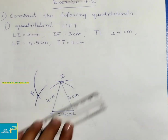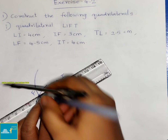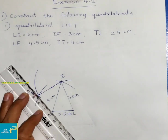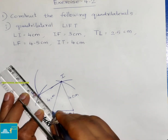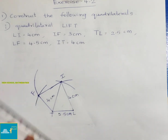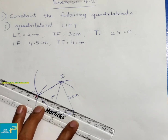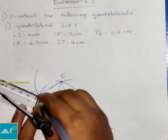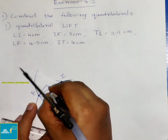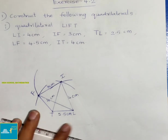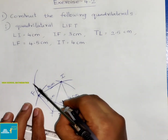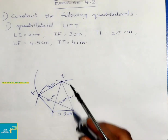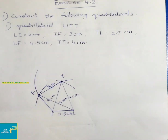Now join IF, then join TF, and also join LF. IF is 3 cm and LF is 4.5 cm. Therefore LIFT is the required quadrilateral.